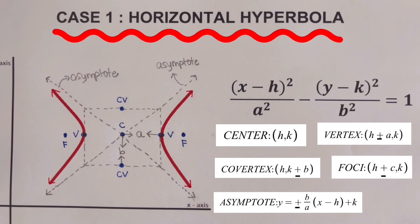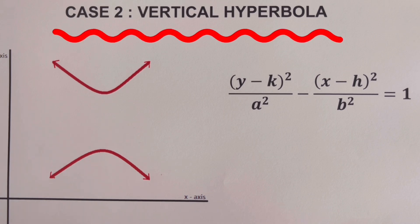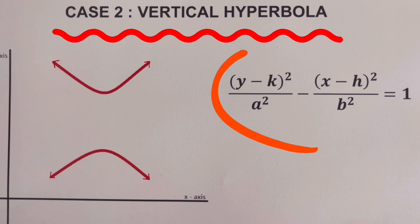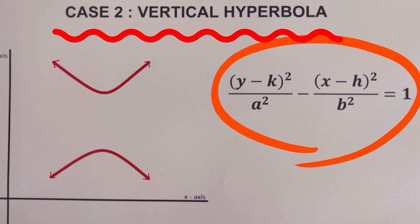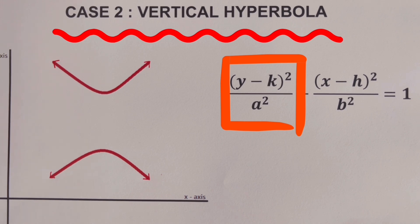Now let's move on to the second case. This graph illustrates the second case of hyperbola, which is the vertical hyperbola, and this is its formula. In this case, the Y part of the equation is the positive part — that's very important because this tells us the hyperbola is a vertical hyperbola. The positive part that I squared is the Y part.